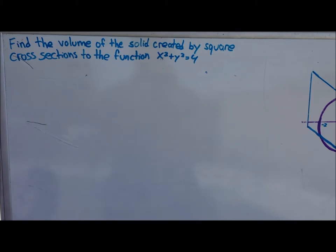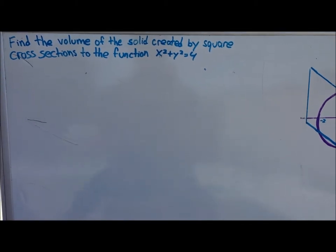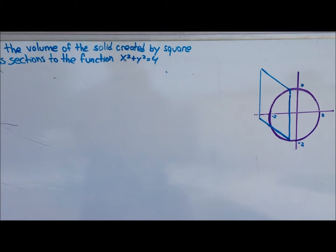As we know, x squared plus y squared equals 4 creates a perfect circle on the graph.